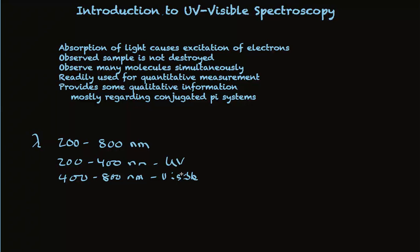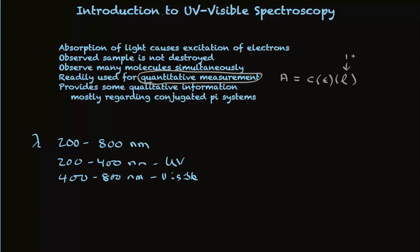UV visible spectroscopy is readily used for quantitative measurement, and that is the most important aspect as it's used in today's laboratories. This quantitative measurement is achieved through the application of a very simple equation: the absorbance measured as light passes through the sample is equal to the concentration of the sample times a very specific number times the path length. This path length is typically set at one centimeter, so its numerical value is one and it effectively goes away.